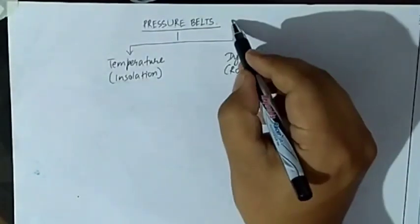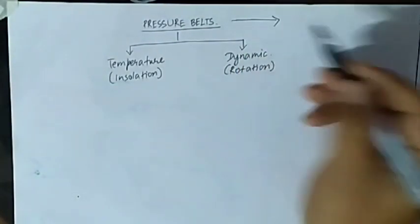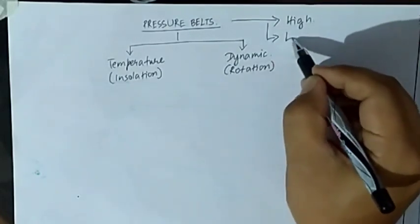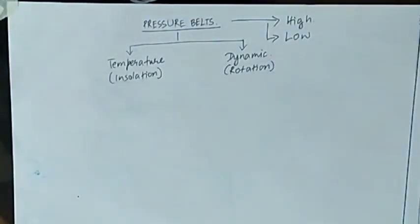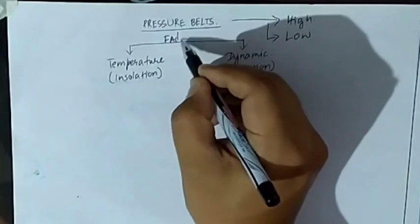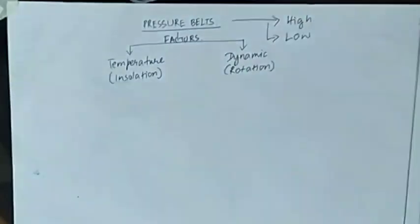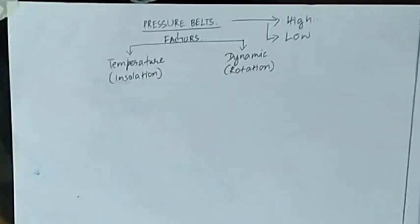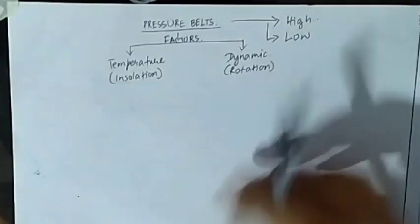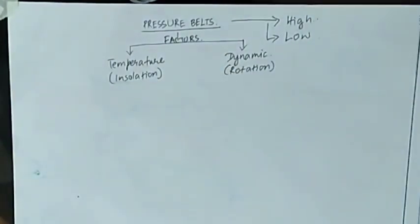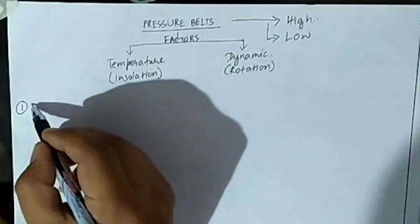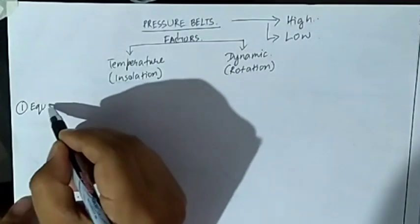Now basically the pressure belts are of two types: there are high pressure belts and low pressure belts. There are different pressure belts present on the earth's surface globally, and on the basis of high and low pressure belts, four different pressure belts or pressure systems are formed on the earth's surface.